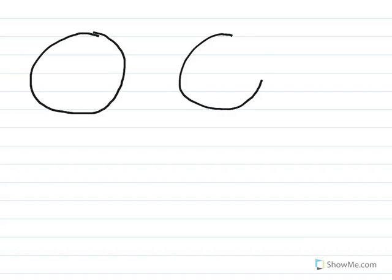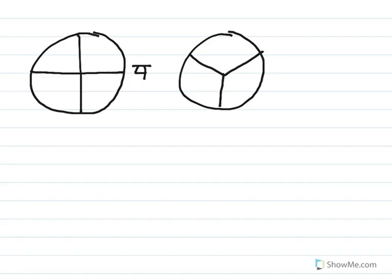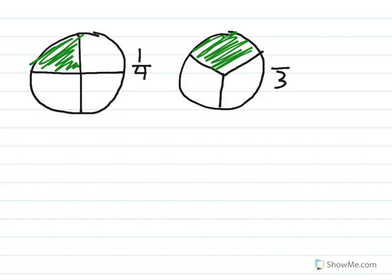In this next section we're going to look at our wholes being circles. Again, I'm going to try and make them equal size as best as possible. The first one I'm going to divide into fourths, and the second one I'm going to divide into thirds. So here my denominators are different. Now I'm going to shade in one-fourth here. And since I want my numerators to be the same, I'm going to shade in one-third here.